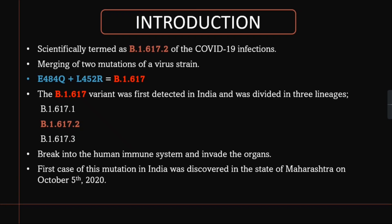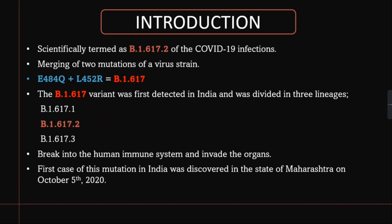This triple mutant is formed by the merging of two mutations. B.1.617.2 is commonly nomenclatured as the Delta variant, B.1.617.1 is nomenclatured as the Kappa variant, and B.1.617.3 has not been commonly nomenclatured yet and will be named further.